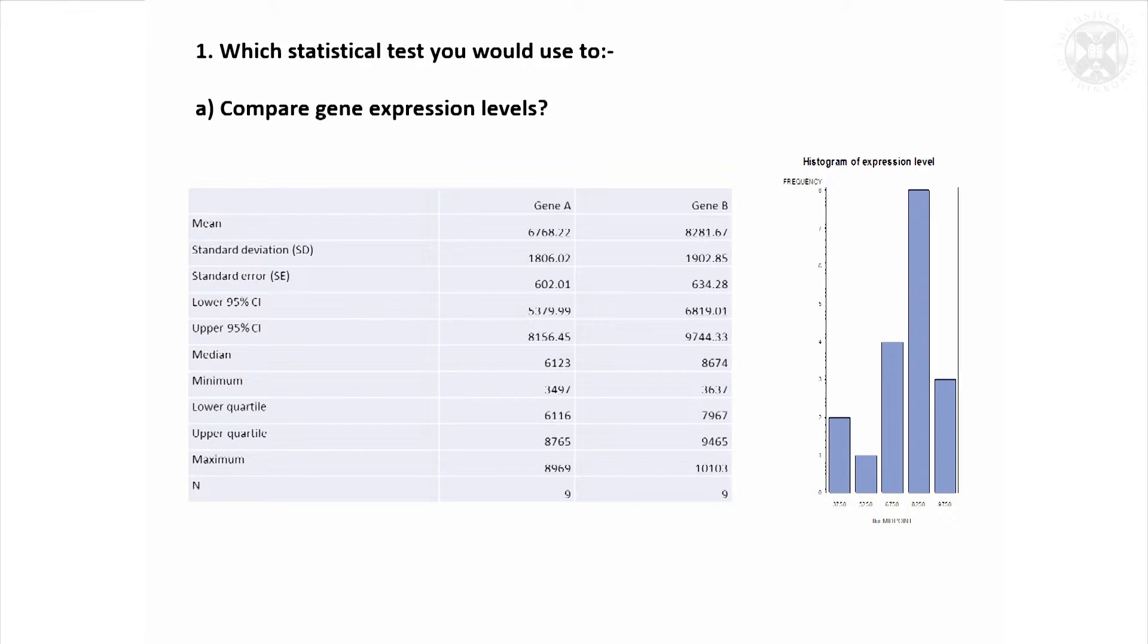This is some summary statistics from two measures of expression from two genes. If you want to compare the expression levels, the first question is what test do you think you would use? Certainly, I think you couldn't be sure that it was normally distributed. If you had some other data that showed it was, then you could be more confident about using the unpaired t-test. But if you didn't and you really thought 'I don't know if this data is normal or not,' then the Mann-Whitney U test would be the one to think about.